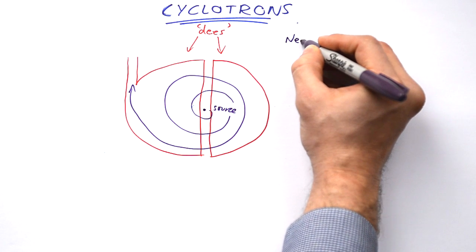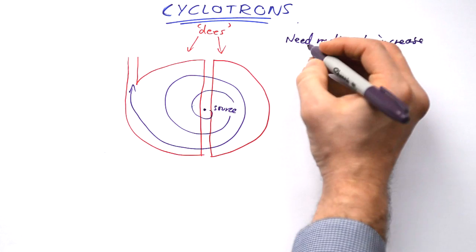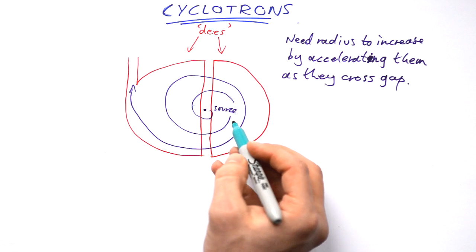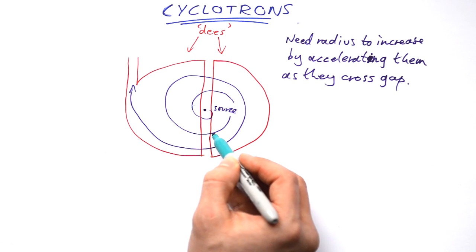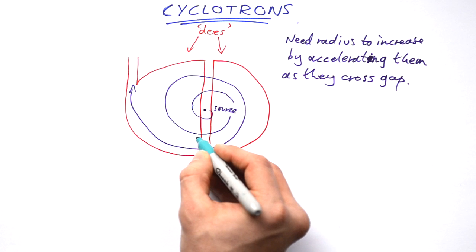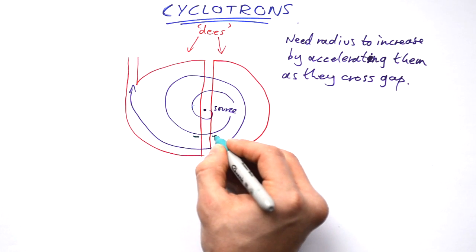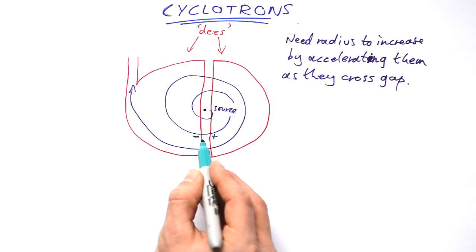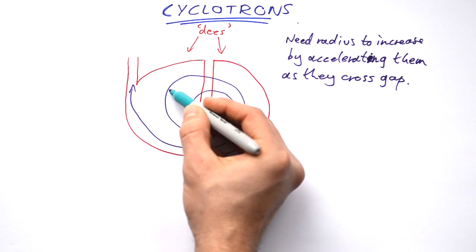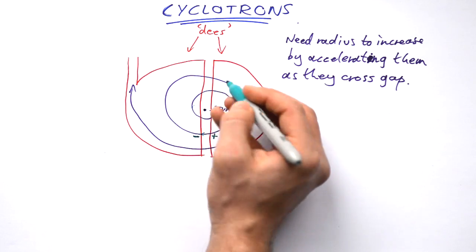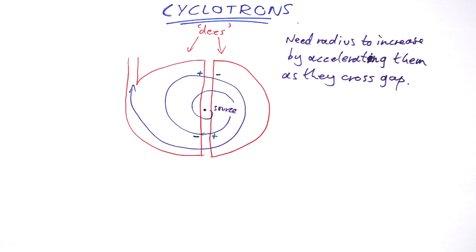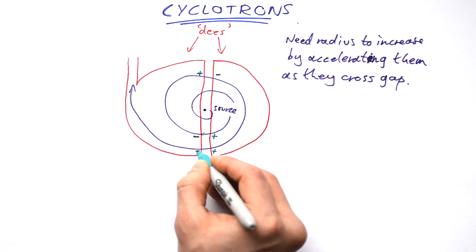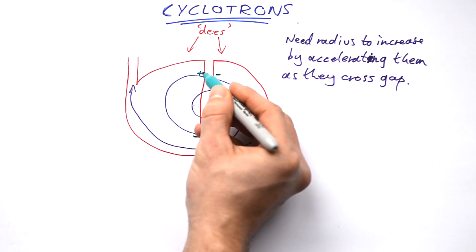We need the radius to increase as the particles spiral outward. We achieve this by accelerating them as they cross the gap between the two Dees. If we charge one Dee negative and the other positive, the protons accelerate toward the negative side. But by the time they return to the gap, we need to flip the polarity of the Dees so they accelerate across the gap the other way too. We have to flip the polarity every half a turn.